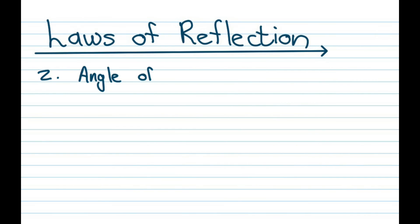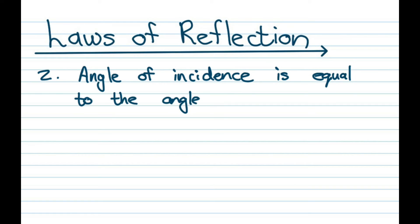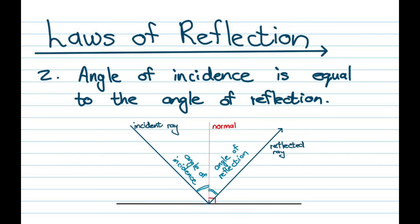Our second law says that the angle of incidence is equal to the angle of reflection. You can see that the angle made by the incident ray and the normal, and the one made by the normal and the reflected ray, are the same size.